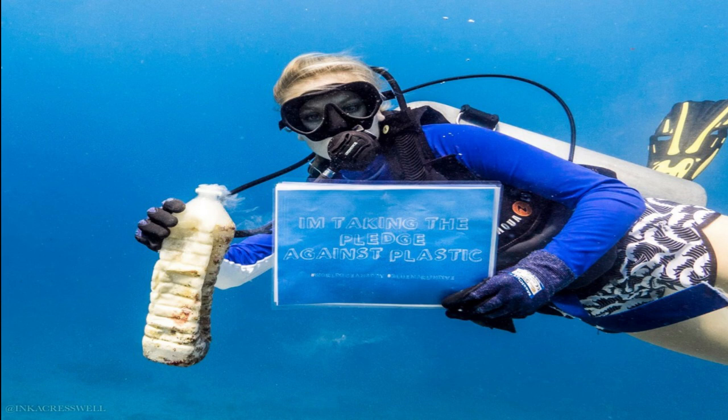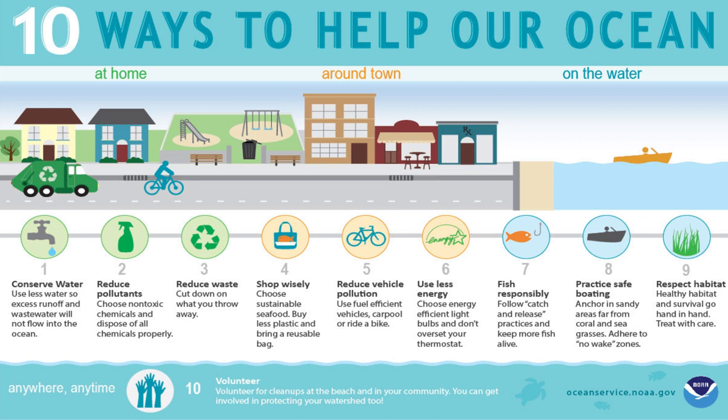Some control measures for marine pollution: Number one, a ban should be imposed against dumping of waste garbage along seashores. Number two, input of fertilizers, pesticides and industrial effluents into rivers should not be allowed. Number three, effluents should be discharged only after proper treatment. Number four, standard quality of oil tankers and cargo ships should be set and followed to minimize oil spillage accidents.